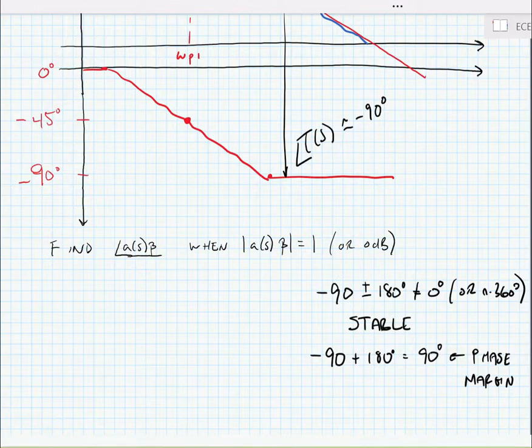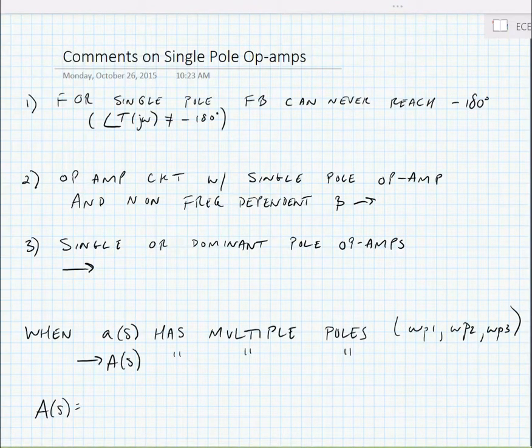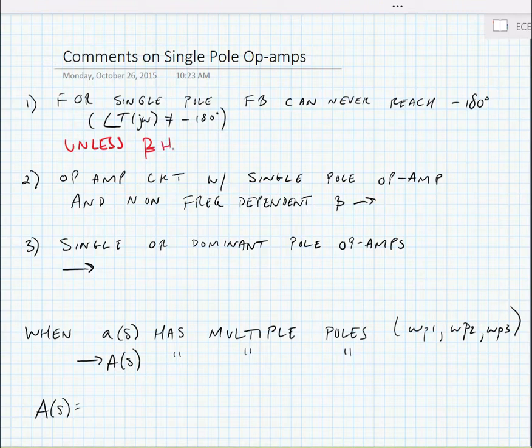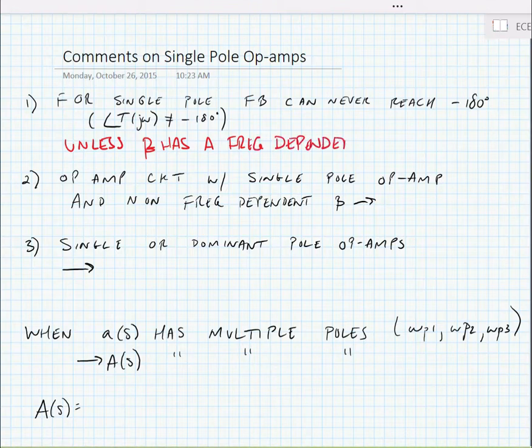Now let's make a few notes about single pole op-amps. For single pole op-amps, feedback can never reach minus 180 degrees, meaning that the loop gain can never reach minus 180 degrees unless beta has a frequency dependence. Generally, beta has a very small frequency dependence, so we consider that. So what we can say about op-amp circuits using single pole op-amps is that with non-frequency dependent beta they are always stable.